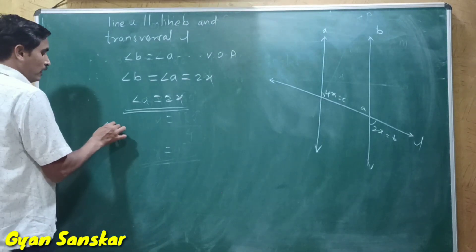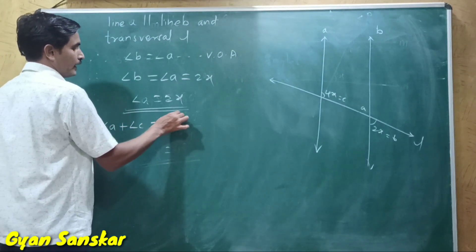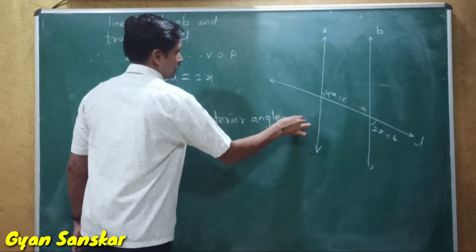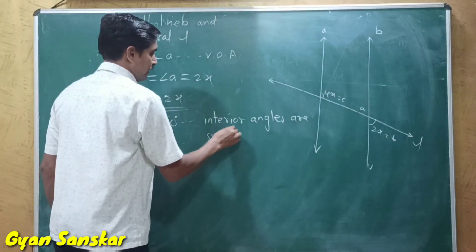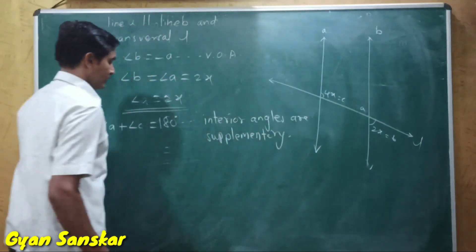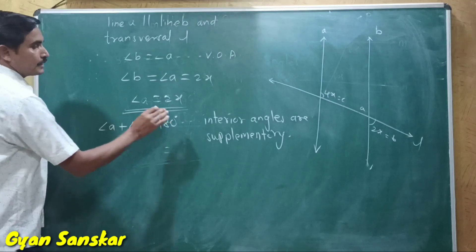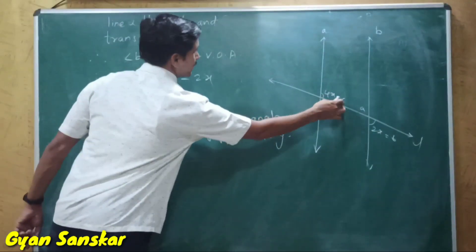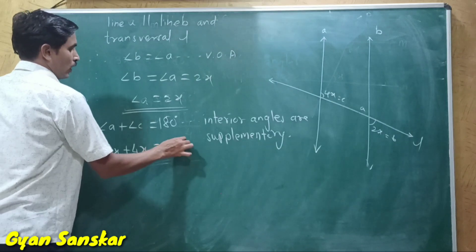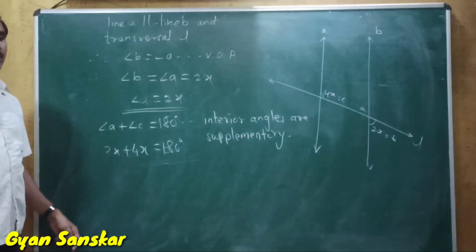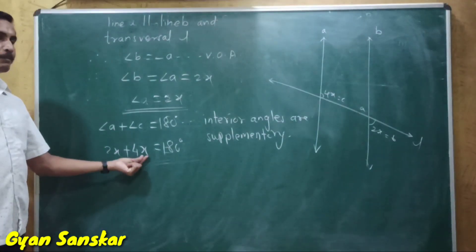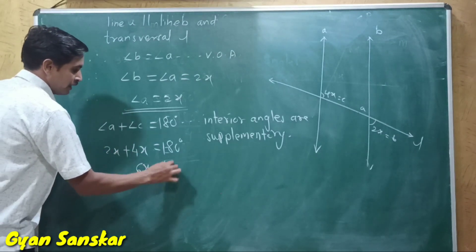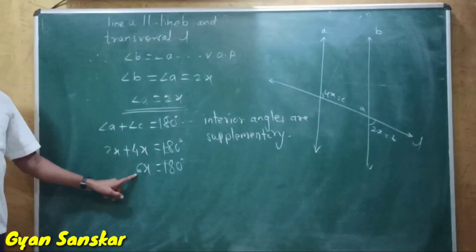We know that angle A plus angle C is equal to 180 degrees because interior angles are supplementary — meaning their sum is 180 degrees. Therefore, angle A plus angle C equals 180 degrees. We know the value of angle A is 2x and the value of angle C is 4x. So 2x plus 4x equals 6x, which equals 180 degrees.